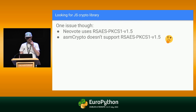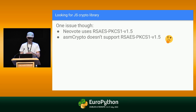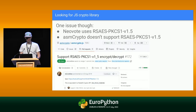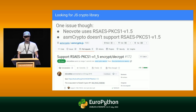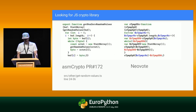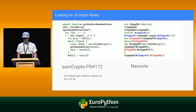There is one thing that doesn't add up. Neovote uses one type of encryption — RSA with PKCS padding — and this precise algorithm is not supported by ASM crypto. So they use an unmerged pull request of ASM crypto. Here you can see: the Neovote code and the ASM crypto pull request are the same code.